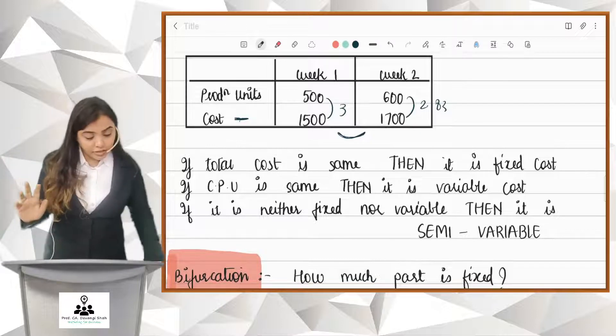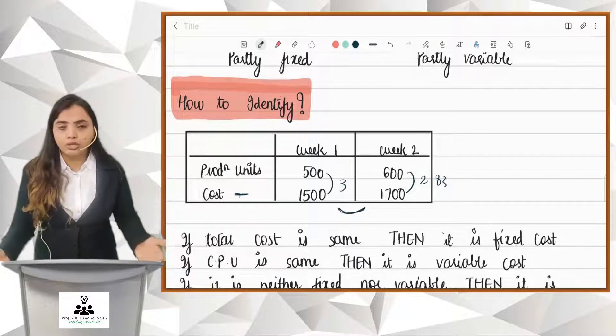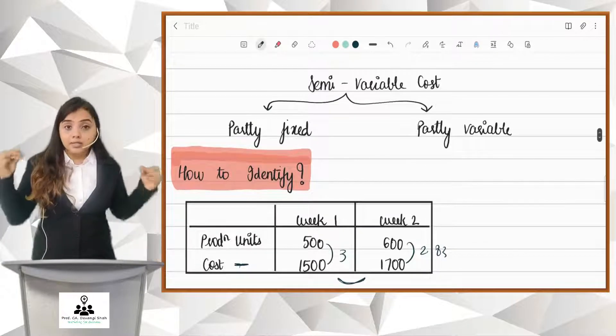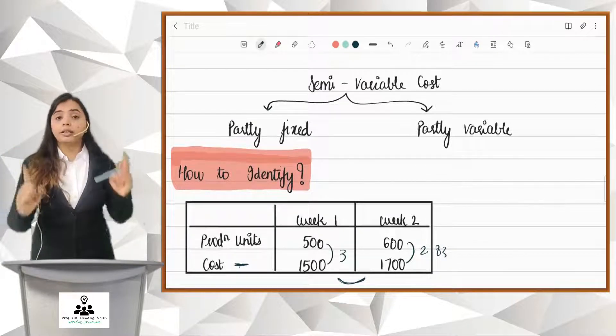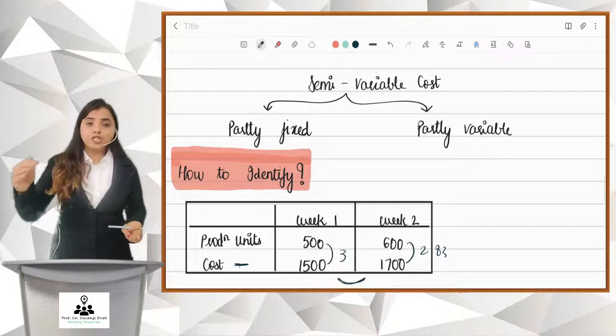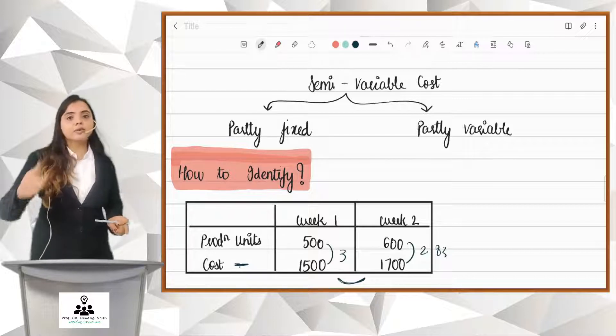And friends, this is the only way to identify. I cannot directly jump to a conclusion. I cannot directly look at this cost, 1500, 1700, and say that it is a semi-variable. No, I cannot directly say, I have to take this order only. I have to first prove that it is not fixed. It is not variable. And that is why it is semi-variable.